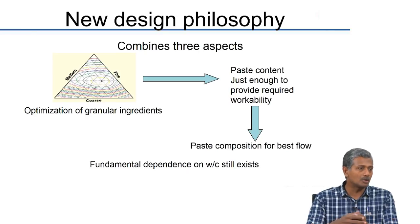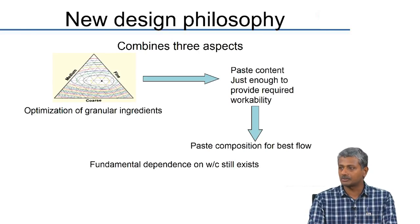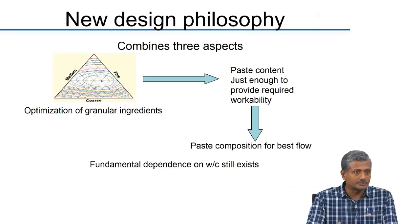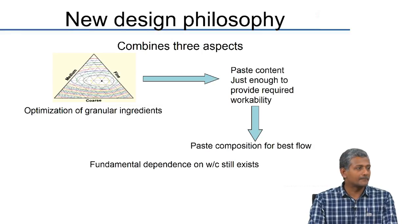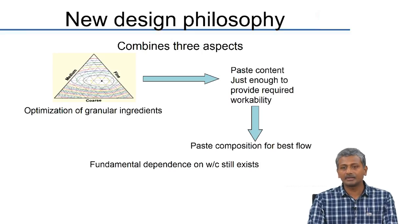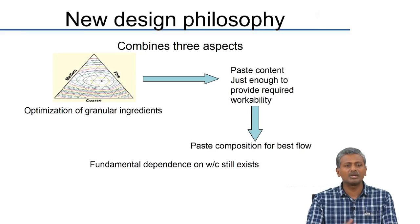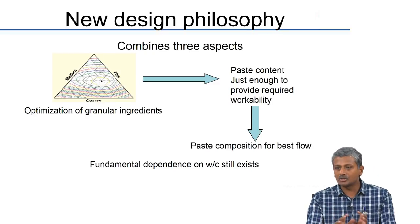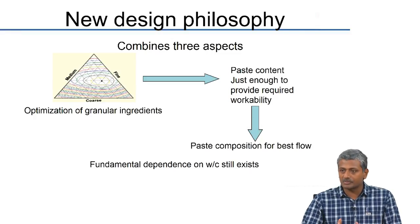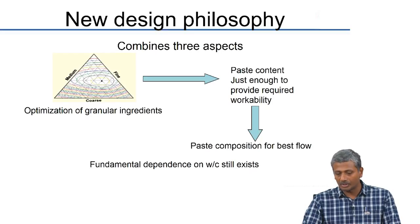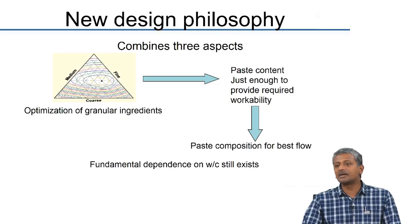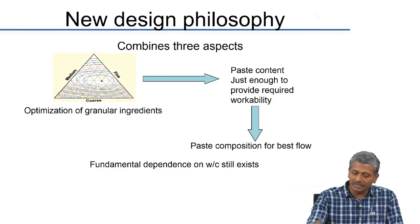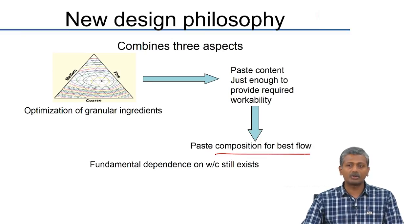Paste content is restricted to what is just enough to provide the required workability. You do not require high flow conditions for all applications, nor do you require concrete to be self-compacting for all applications. At the same time, there are applications requiring high flow conditions and others requiring zero slump — for example, roller compacted concrete, curb casting, or slip-formed concrete for pavements. You can design your concrete adequately for different requirements by doing a combination of these three aspects: optimization of granular ingredients, paste content determination, and maximizing paste characteristics for flow.